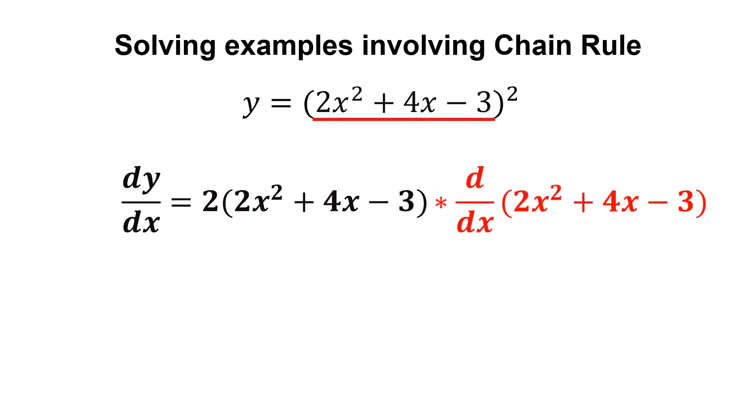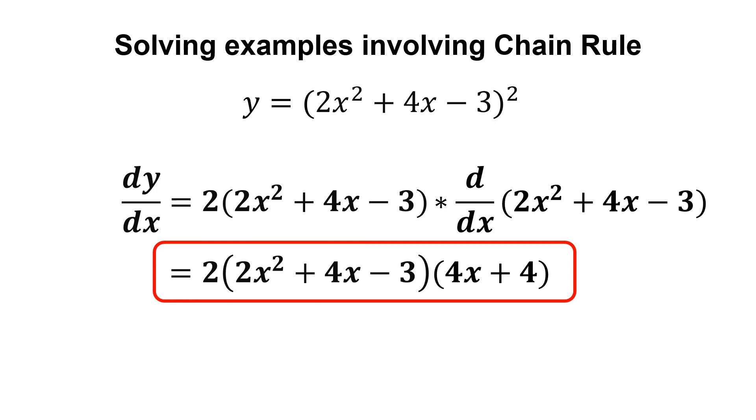After all, we multiply it with the derivative of the inner function. Differentiate 2x squared we get 4x, and differentiate 4x we get 4. Lastly, differentiate negative 3 which is a constant, we get 0. And we got our final answer.